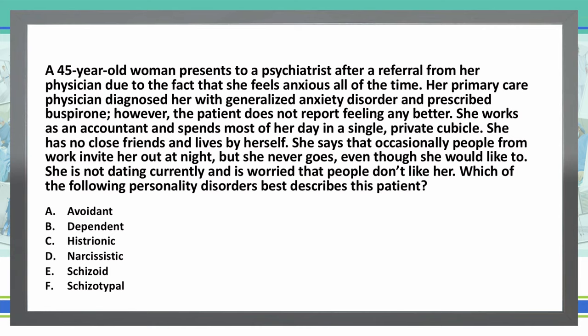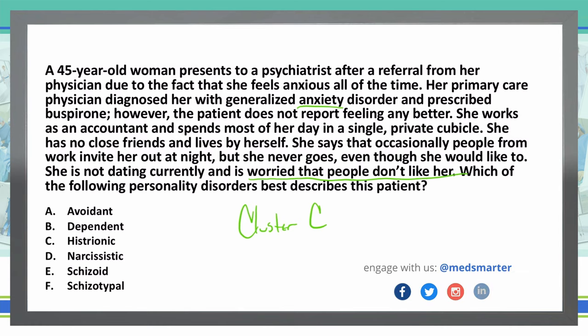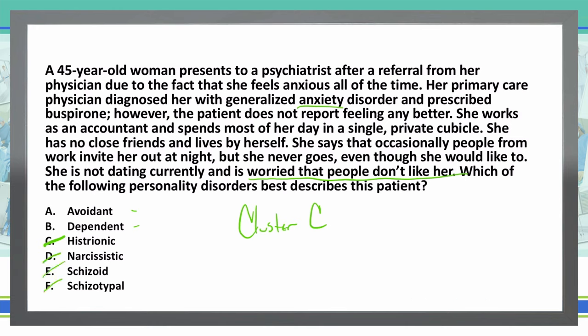It appears that this patient has anxiety, as well as some fearfulness of being rejected or unliked — she's worried people don't like her. So she has some sensitivity to rejection. She's somewhat socially inhibited and might have some feelings of inadequacy. This seems to be a cluster C personality disorder — avoidant, obsessive-compulsive, and dependent. So we have avoidant and dependent in A and B. Histrionic, narcissistic, schizoid, and schizotypal are not cluster C. Therefore we have narrowed our answer choices down to A and B.